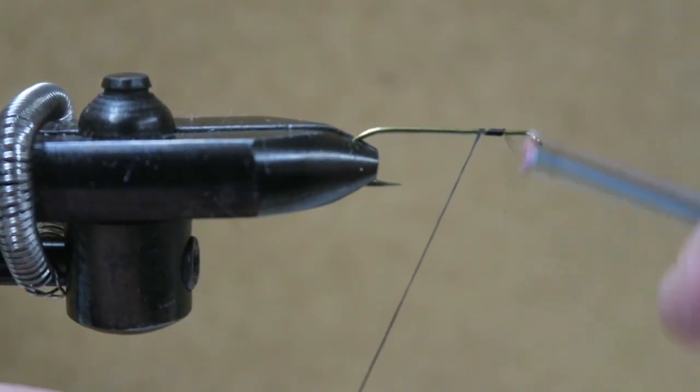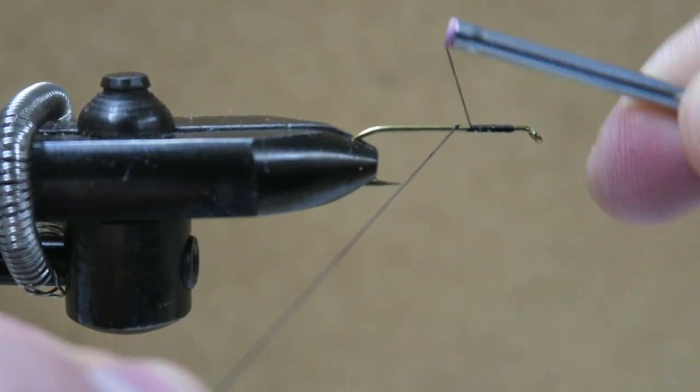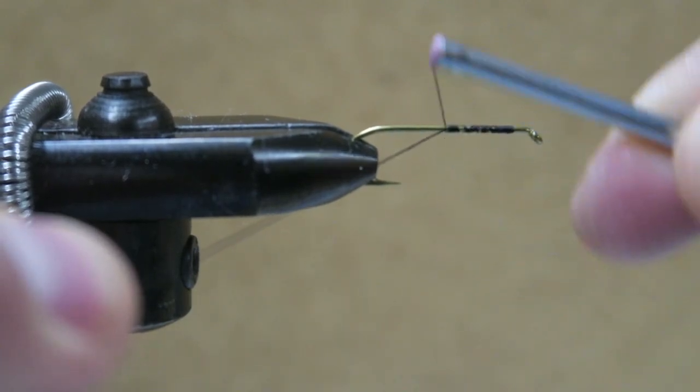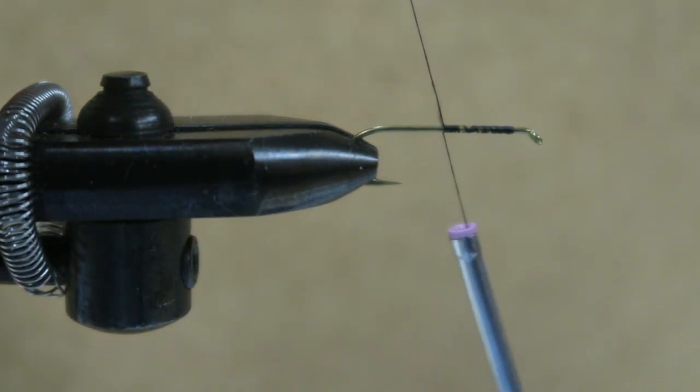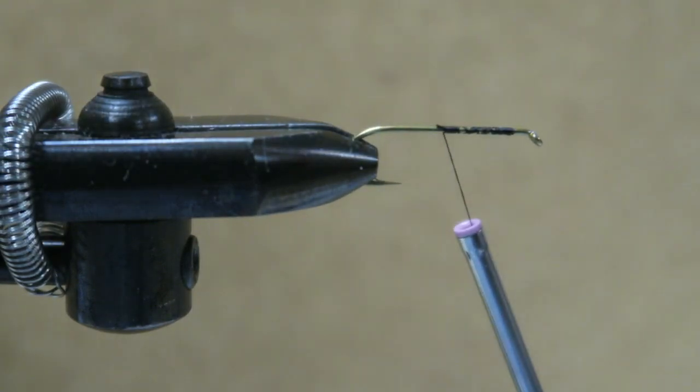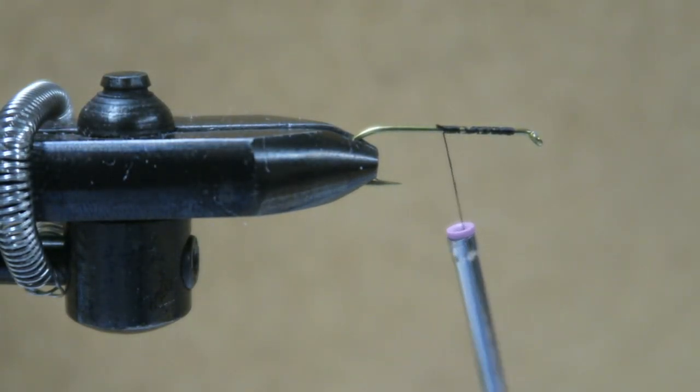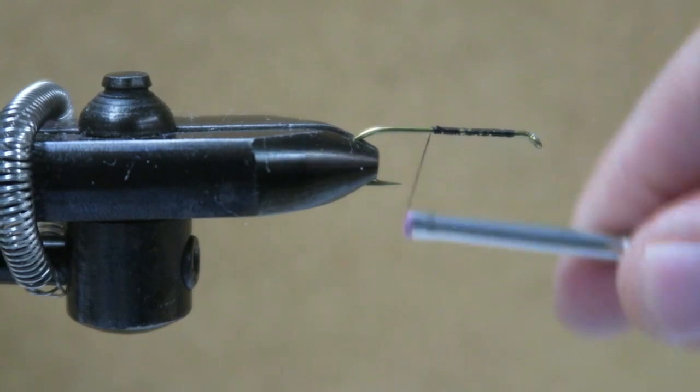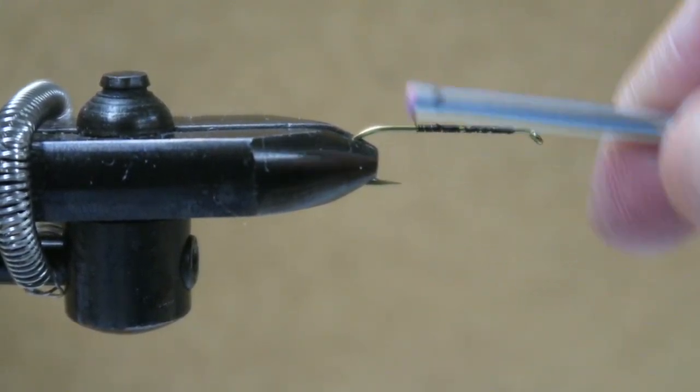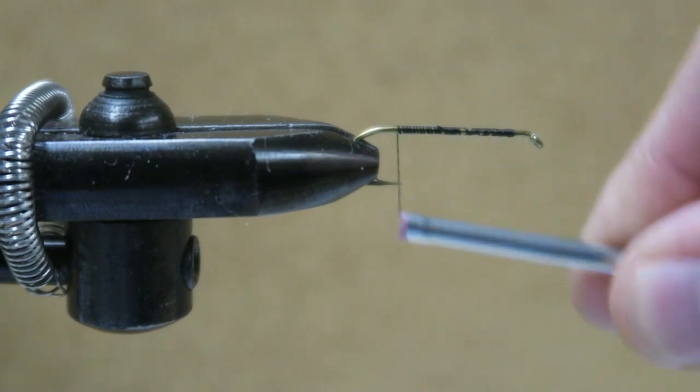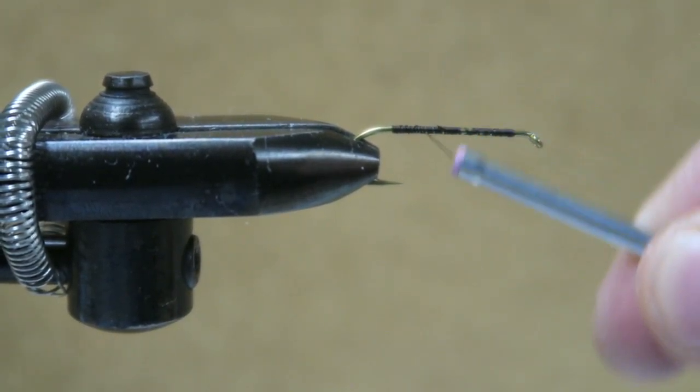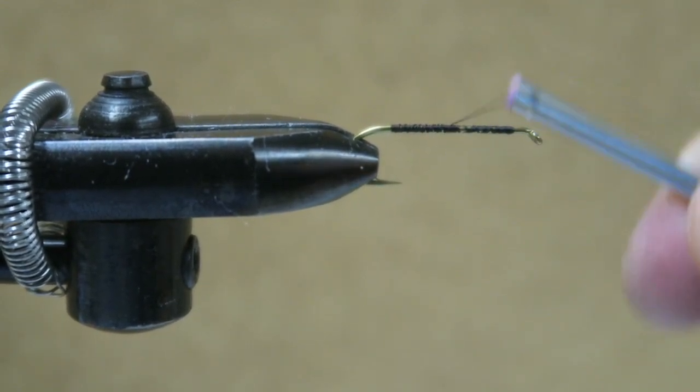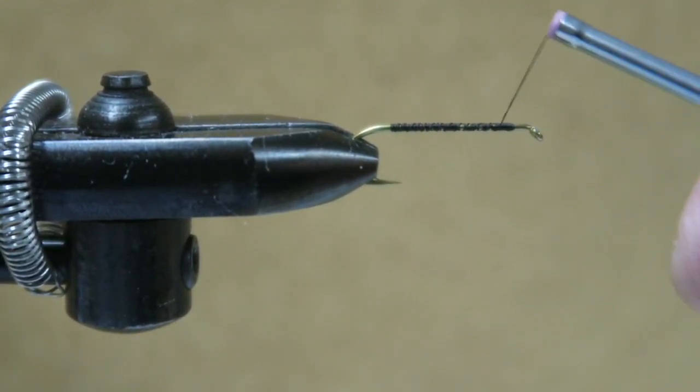Start off by making a thread base out of black thread. This fly is pretty easy to tie up and you don't need much material for it. You just need white yarn, silver wire, and your black thread of course.